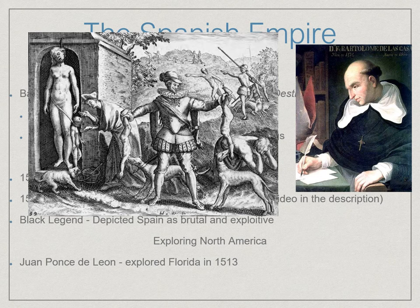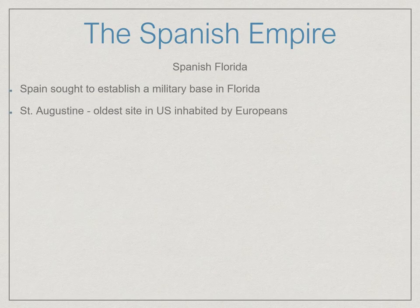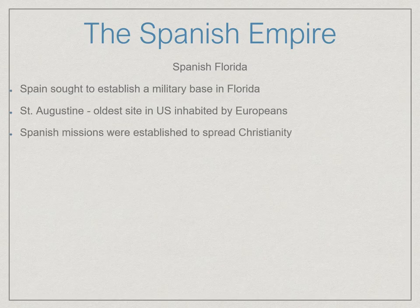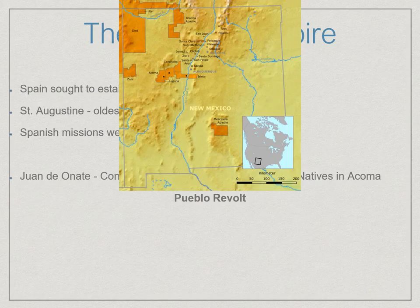More exploration of North America would continue. In the early 16th century, Ponce de Leon explored Florida for Spain and, elusively, found the fountain of youth there. Some of these expeditions attacked Native societies; some were simply exploratory. Spain wanted to establish a military base in Florida once it was realized that Florida was not an island but a large landmass — a good launching place. They established St. Augustine, which is the oldest inhabited European settlement in the United States. They spread Christianity through the region. In the Southwest, Juan de Oñate was a conquistador who chose to attack Native peoples in the area of modern-day New Mexico.